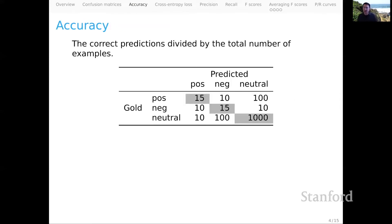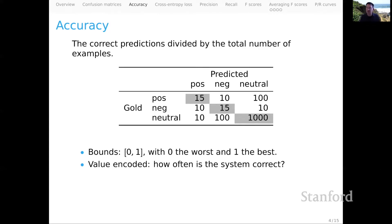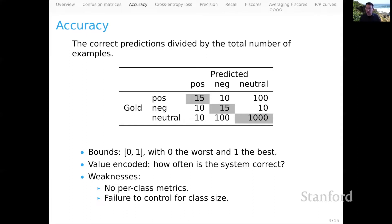Let's start with accuracy, by far the most famous and familiar of all the classifier metrics. Accuracy is simply the number of correct predictions divided by the total number of examples — the sum of all values along the diagonal divided by the sum of all values in the table. The bounds are 0 and 1, with 0 the worst and 1 the best. In terms of the value encoded, it's an attempt to answer the question: how often is the system correct? The weaknesses are first, there's no per-class notion of accuracy, and relatedly, there is a complete failure to control for class size.